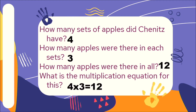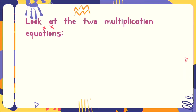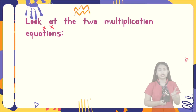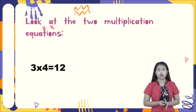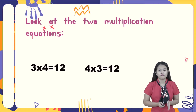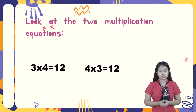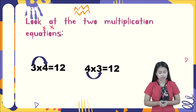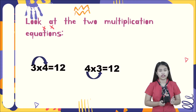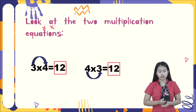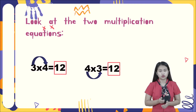What do you observe about the two situations? The two multiplication equations are: three times four equals twelve, and four times three equals twelve. Observe the numbers — we have three and four, then four and three. The factors just changed positions but they have the same product, which is twelve. Therefore, changing the position or order of the factors does not affect the product. This property is called the commutative property.